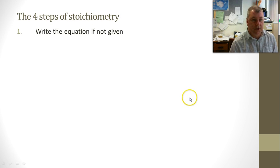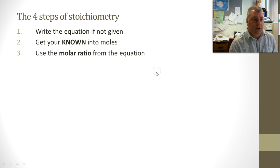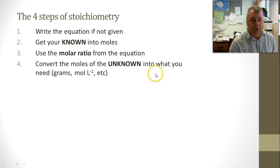So now the four steps of stoichiometry is - now this is the super simplified version of it. Write the equation if you're not given it. Get your known into moles. Use the molar ratio from the equation. Convert the moles of the unknown into what you need, and that's the end of it.